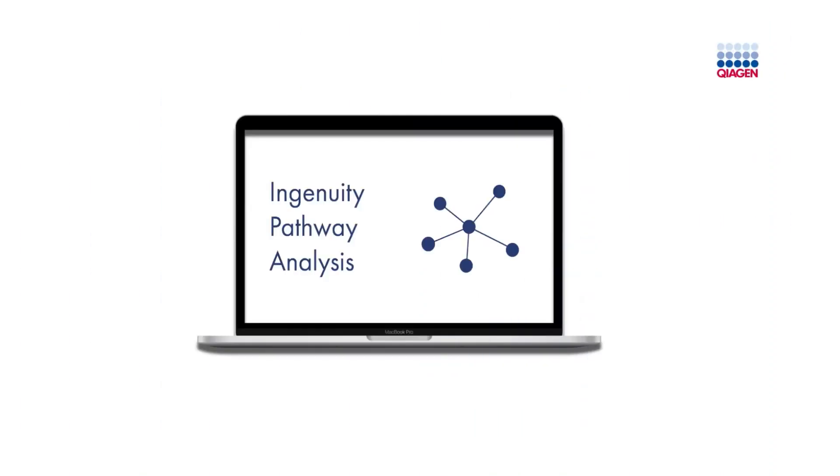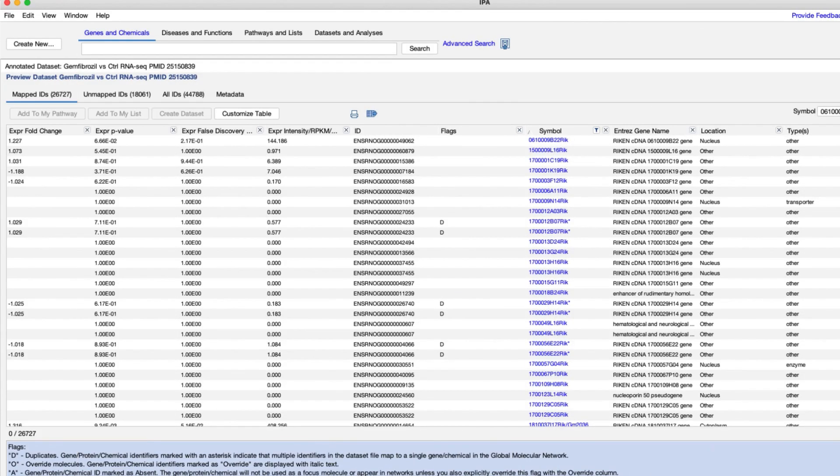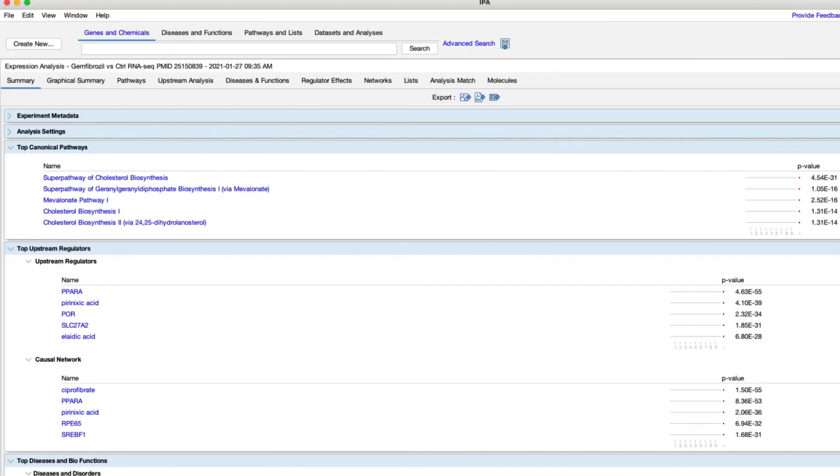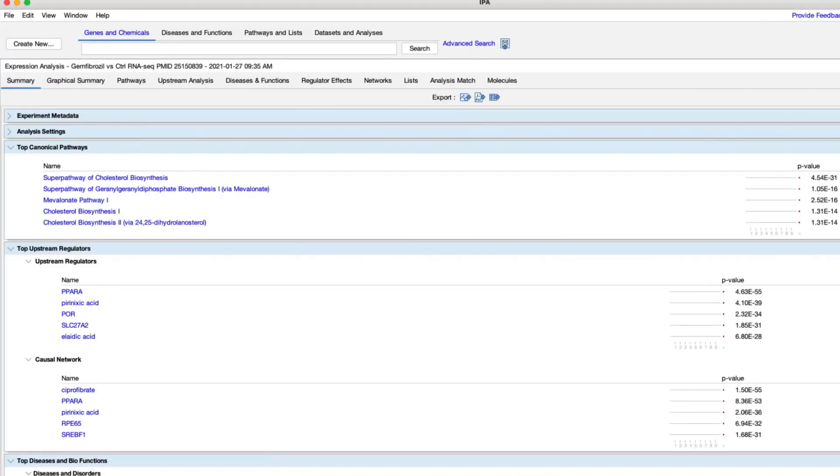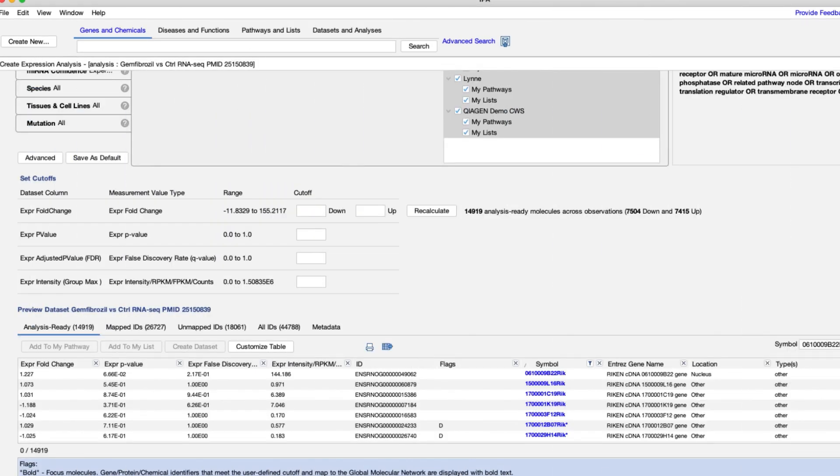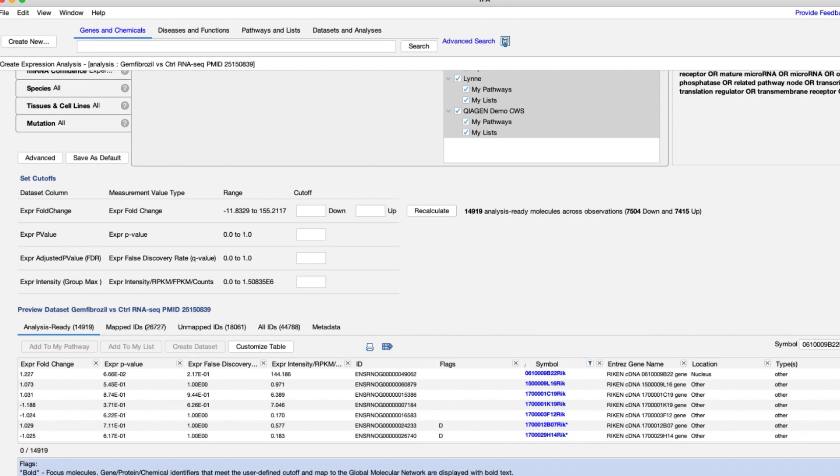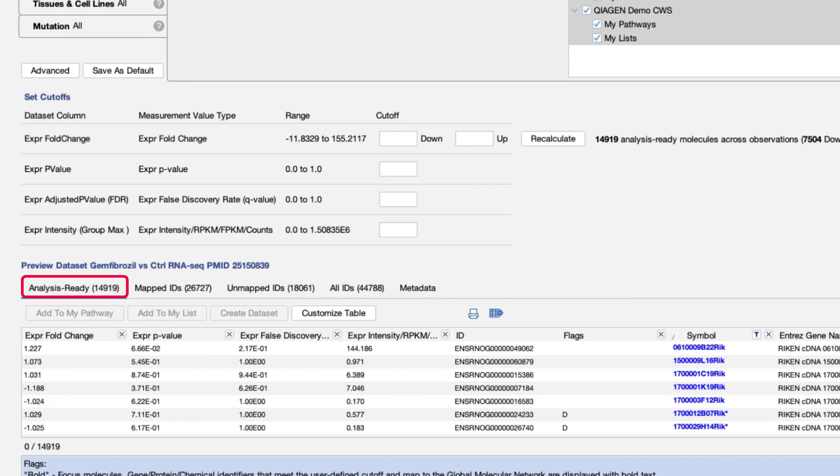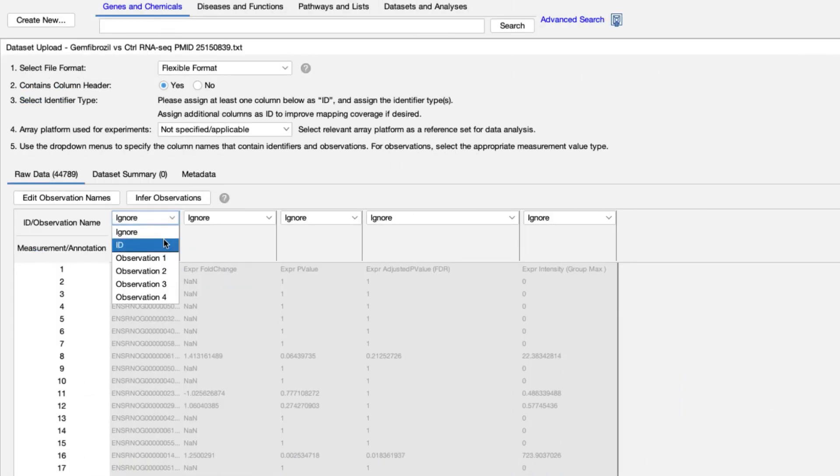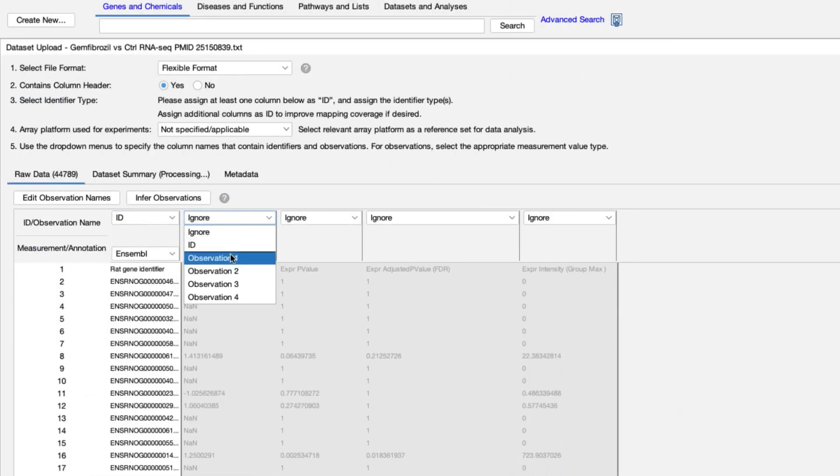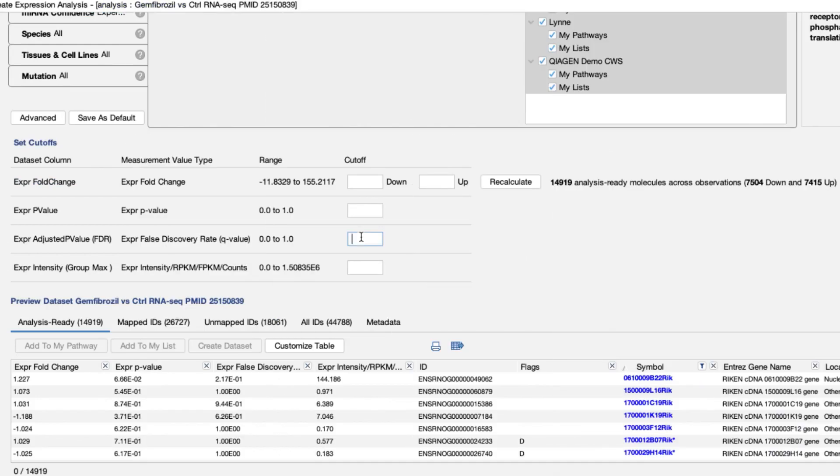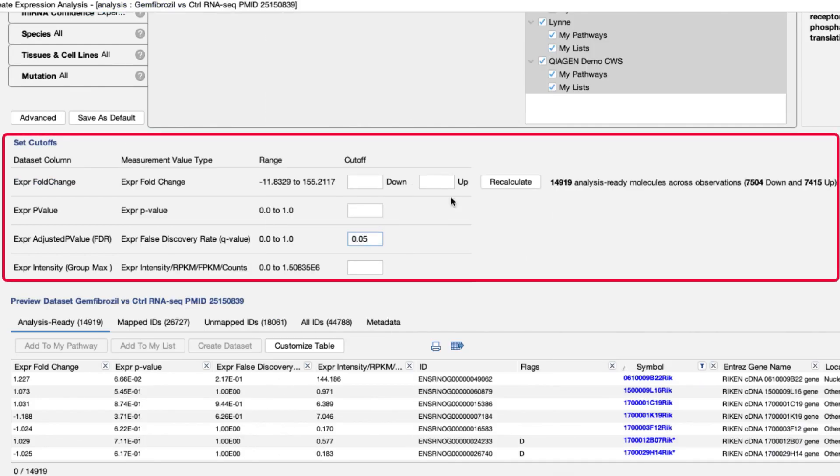You can take advantage of FDRs and adjusted p-values in two ways in IPA. First, when deciding which molecules are analysis-ready before you perform an analysis. And second, when interpreting the results of your core analysis. Before performing a core analysis, you need to determine how many molecules are significantly perturbed in your dataset. These are known as analysis-ready molecules. If you have adjusted p-values, FDRs, or Q-values in your dataset, you can map these data measurement types when uploading your dataset, and then use these values to set cutoffs in the Create Core Analysis page.